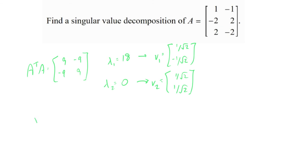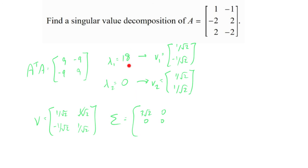V is the matrix with columns (1/√2, -1/√2) and (1/√2, 1/√2). Σ: taking the square roots of eigenvalues, √18 = 3√2, and √0 = 0. So the D part of Σ is (3√2, 0; 0, 0). Then I add a row of zeros so that Σ is the same size as my original matrix A: (3√2, 0; 0, 0; 0, 0).